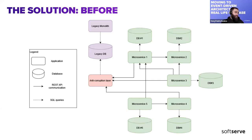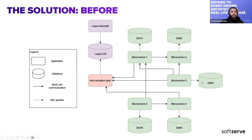Here is our diagram — an anonymized version. I tried to simplify it without showing real microservice names. We have a legacy monolith application, legacy database, and a red bar representing the anti-corruption layer — an application sitting on top of the legacy database providing REST APIs to other microservices. Each microservice has its own small database. For example, microservice one asks for data from the legacy and microservice five; microservice three relies on APIs from microservice one, which also asks something from microservice two. Everything is tightly coupled.